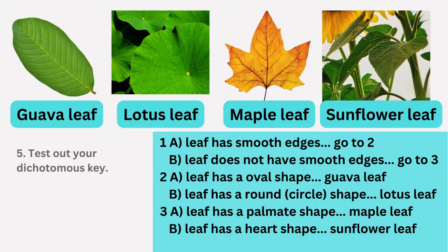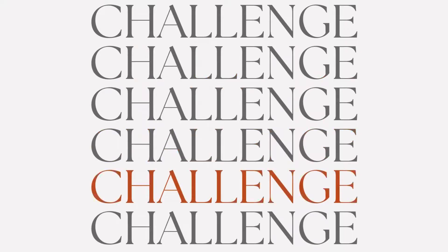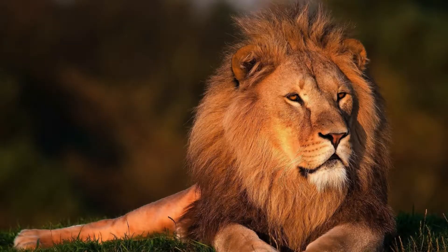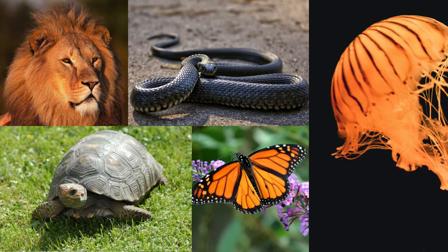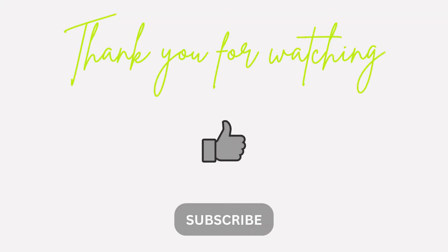Repeat this test with all the organisms. If all organisms can be accurately identified, our key is complete. If not, we'll need to revise and construct a new key accordingly. Now I challenge you to construct a dichotomous key for identifying a lion, snake, tortoise, butterfly, and jellyfish. Feel free to share your key in the comments. Remember, there are many correct ways to create a dichotomous key. Thank you for watching, and don't forget to like and subscribe for more content.